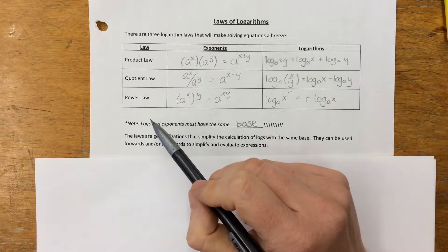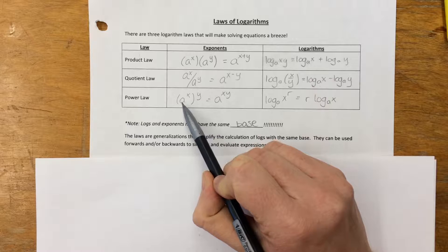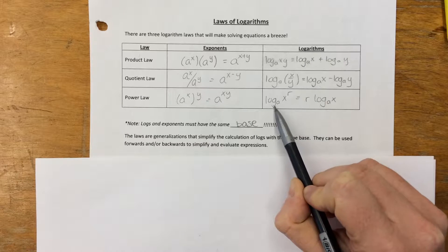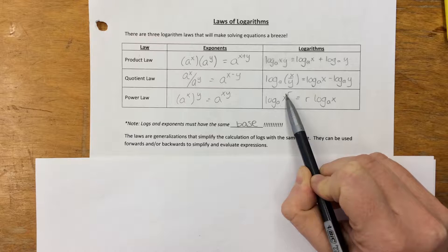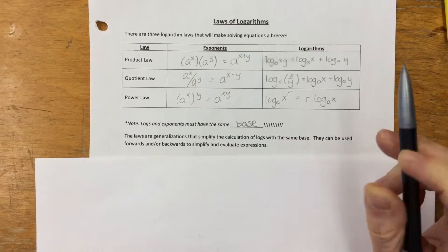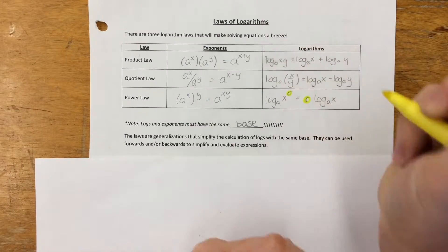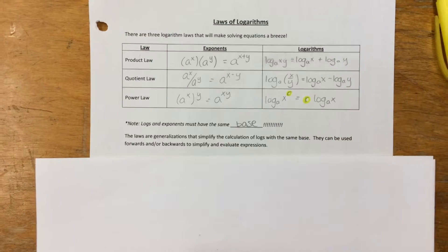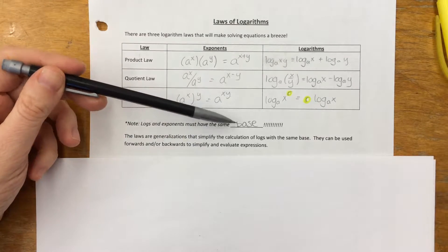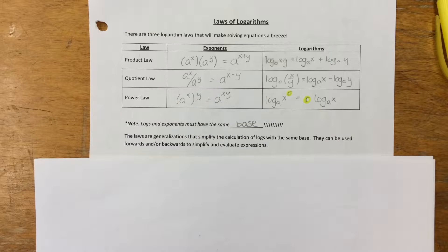This one comes up most often next unit when we're actually solving exponential and logarithmic equations — the power law. We're used to the idea that if we have a power to a power, then we multiply the two exponents. But here this is quite different. If you have log base a of x to the r, you can actually bring down the r to the front and rewrite it as r times log a of x. Whatever the exponent is of the argument of the logarithm can be moved to the front. It's very important to remember that logs and exponents have to have the same base for this to work, so be sure you're checking the base to make sure you're allowed to use these laws of logarithms.